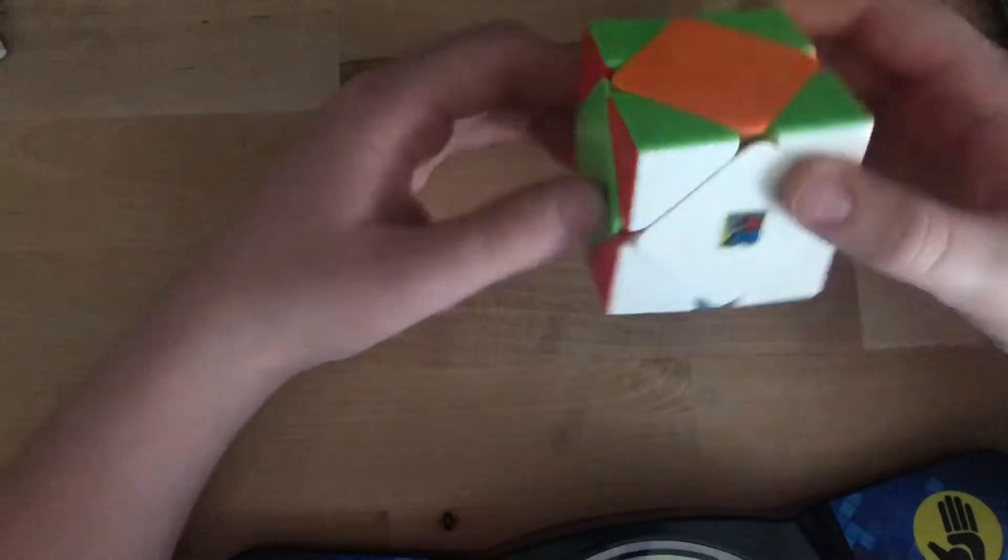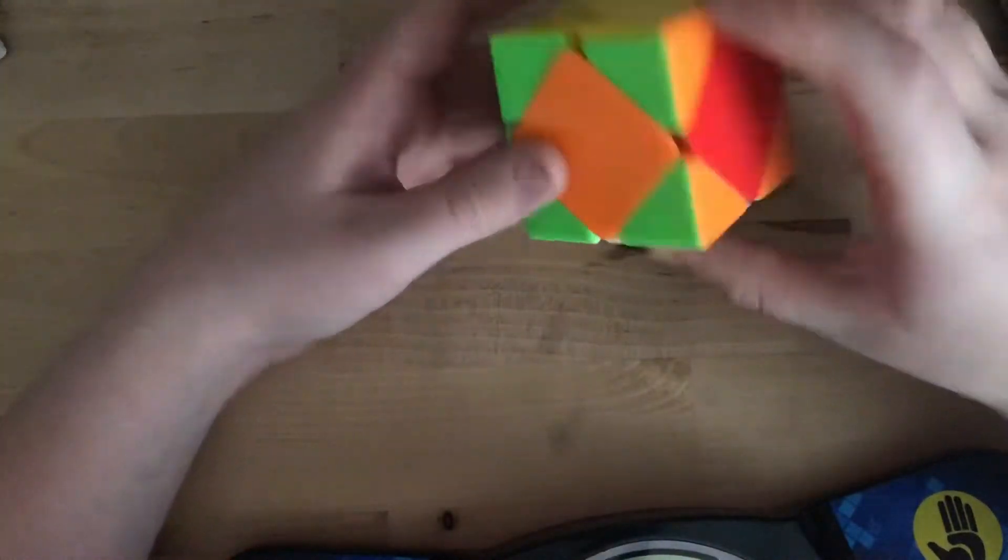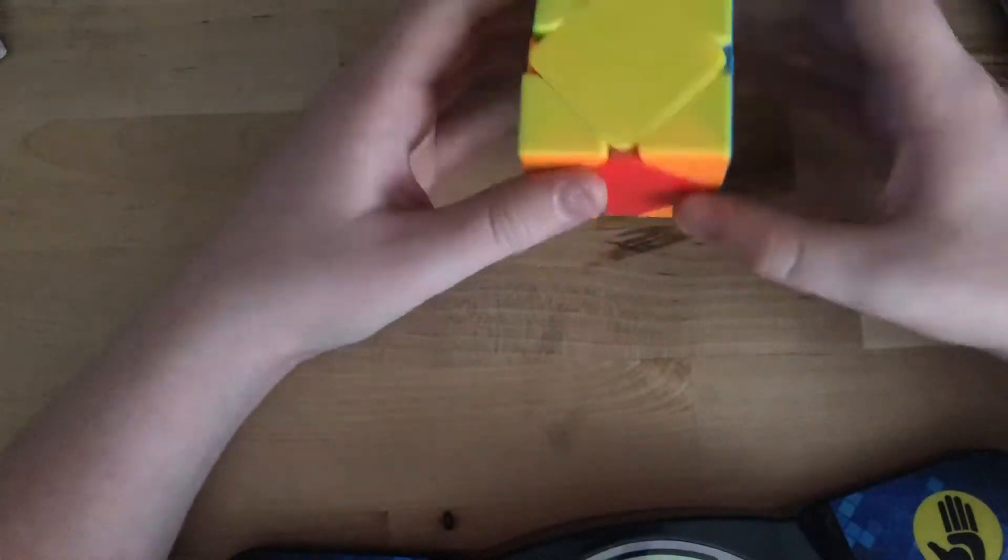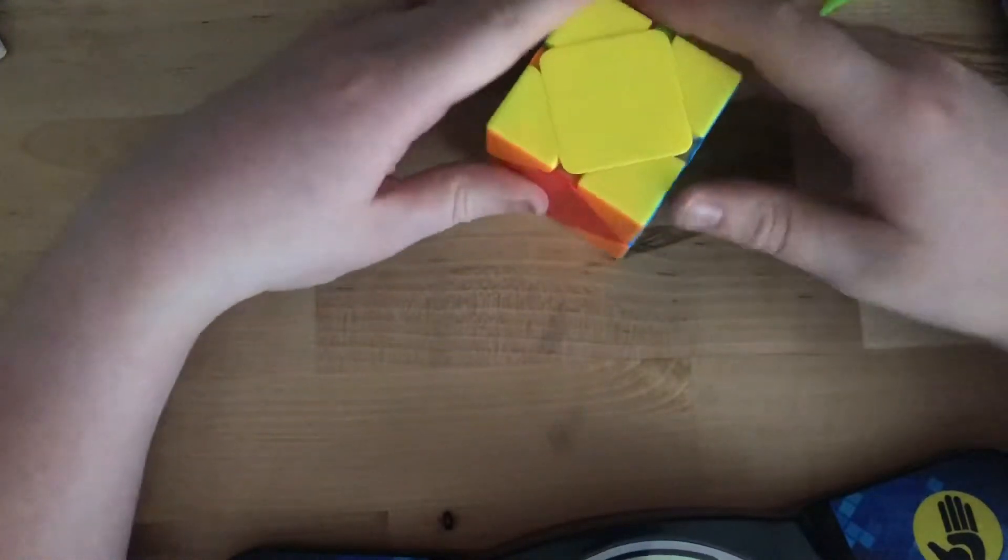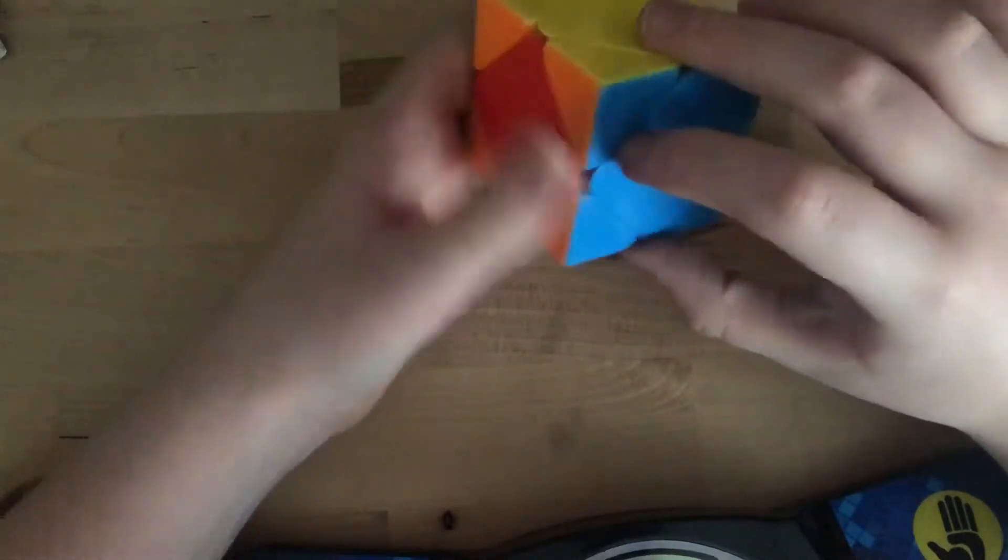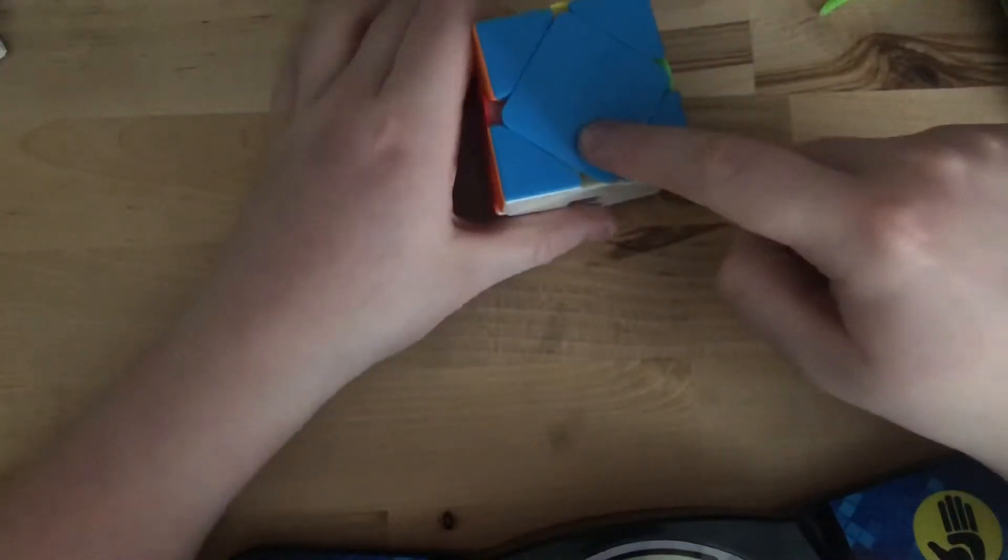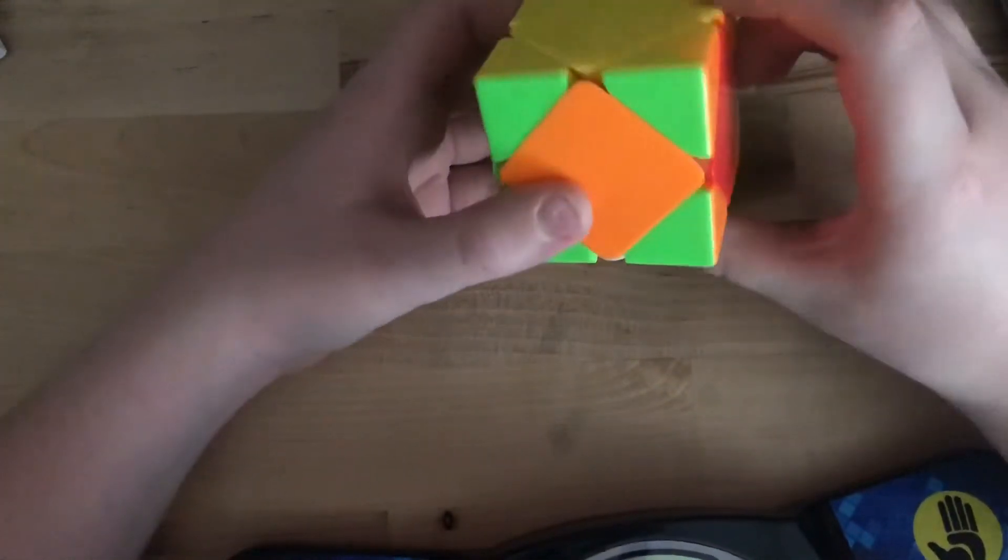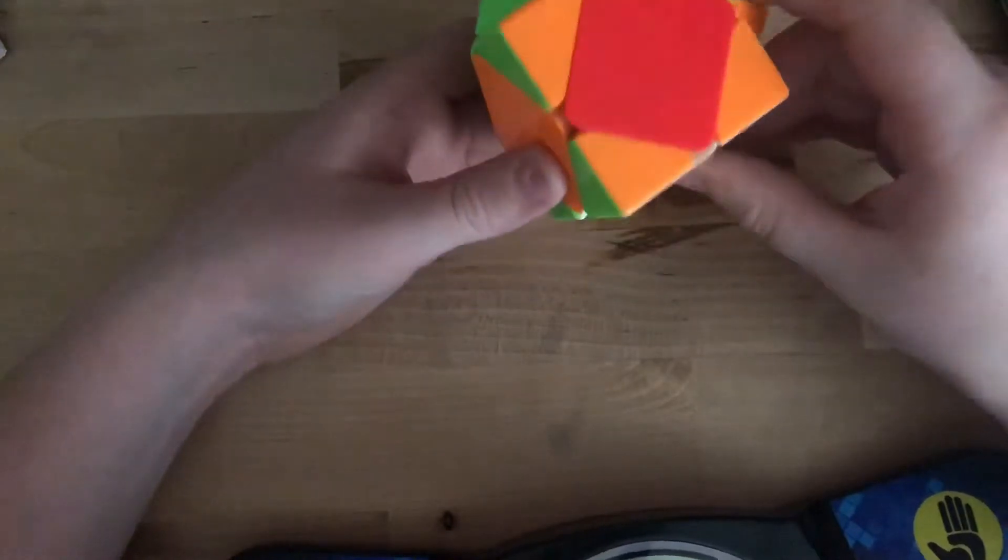Now there are two different types of things that will happen when you solve this. Either all the centers are mixed up, or only one center is solved, or you could just get a skip and the cube is solved after that algorithm.